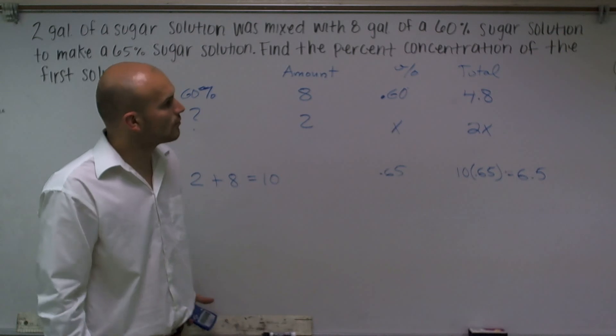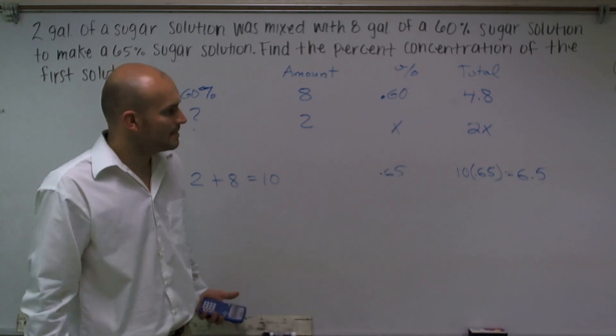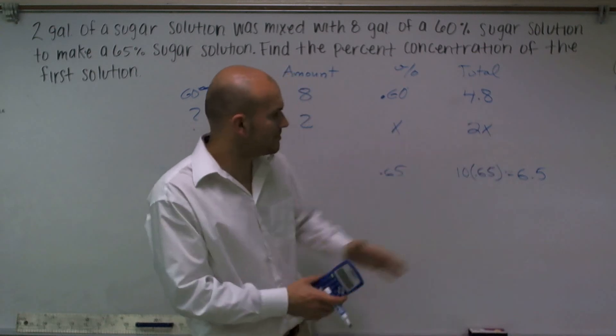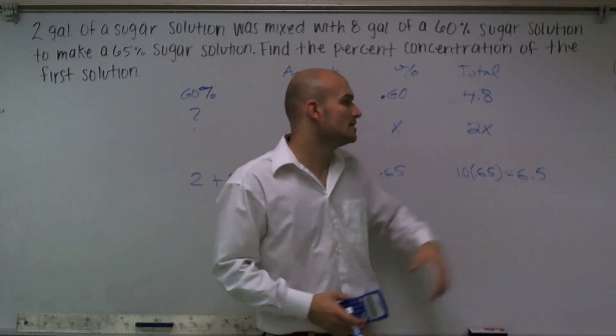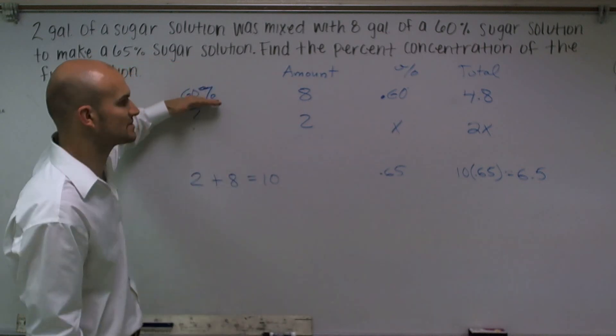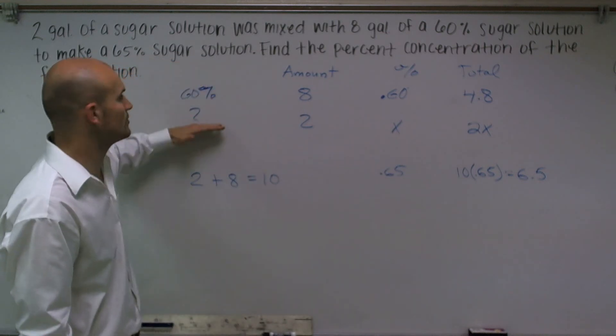So what we're saying here is if I want to figure out, I want my total amount of my solution to be 6.5. So now what I can write is if I know what my solution part for my 60% is, but I do not know what it is for the mystery...